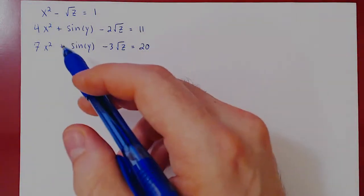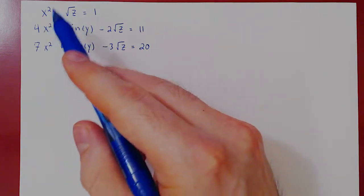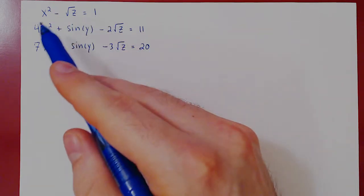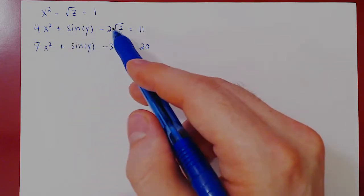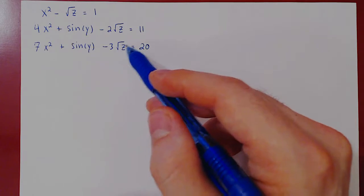Okay, so consider the following system of equations: x squared minus root of z equals 1, 4x squared plus sine of y minus 2 root of z equals 11, 7x squared plus sine of y minus 3 root of z equals 20.